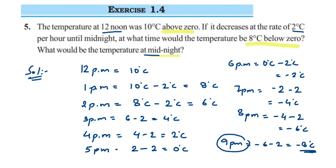So at 9 p.m. the temperature will be minus 8 degrees Celsius. This method is lengthy but easy to understand. I hope this question is clear. If you have any question or doubt, please drop a comment. Thank you so much for watching.